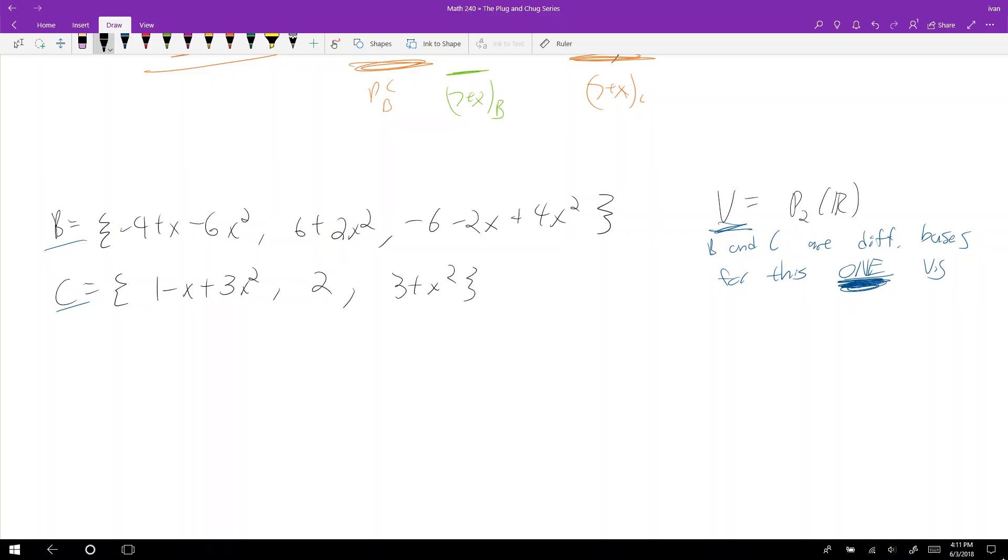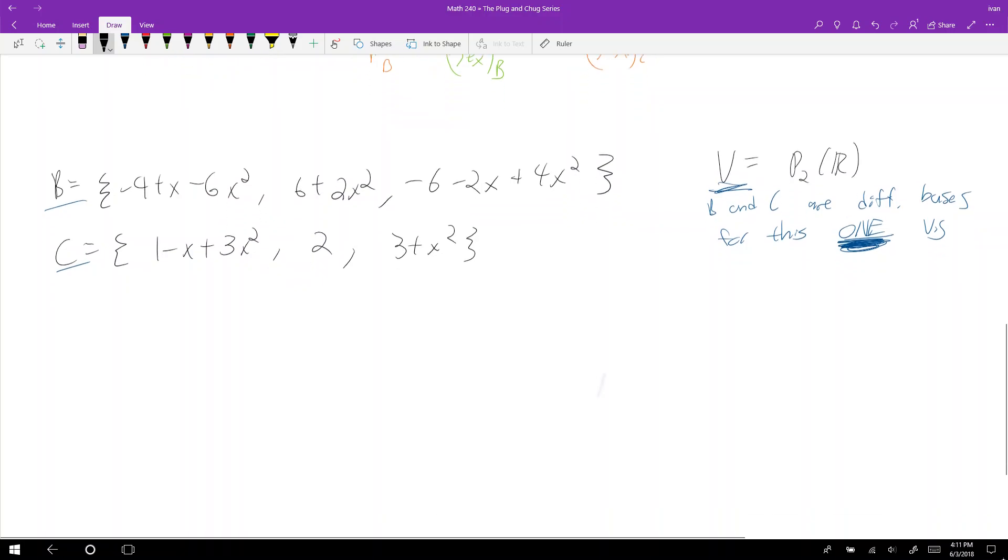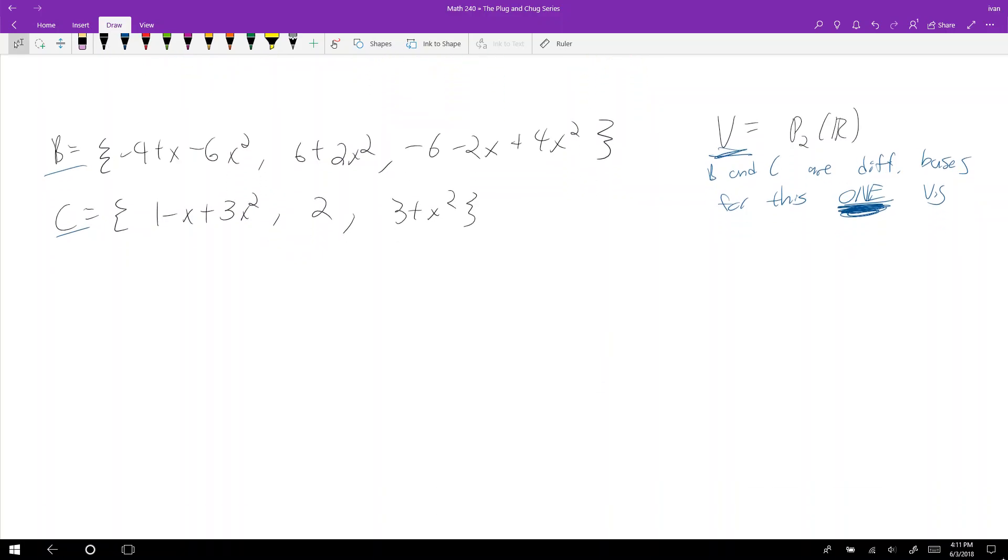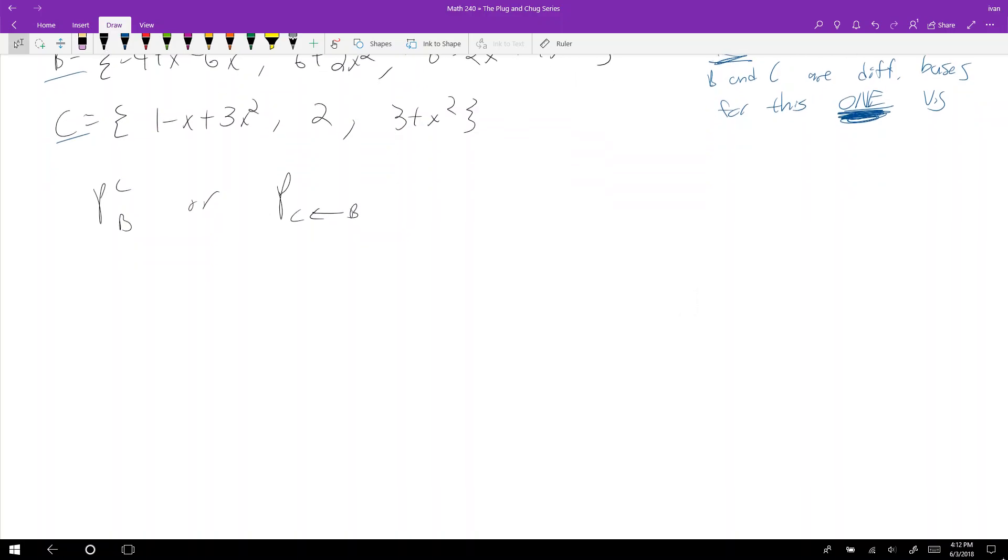We're only in one vector space. I make a huge deal out of this because you're gonna get confused, and this is how you distinguish 6.5 from this chapter. Now with that rant over, let's move on. What's the shortcut? How do I find PBC, or sometimes written as PBC, depending on what your professor likes doing?